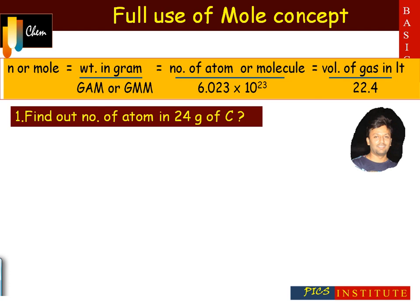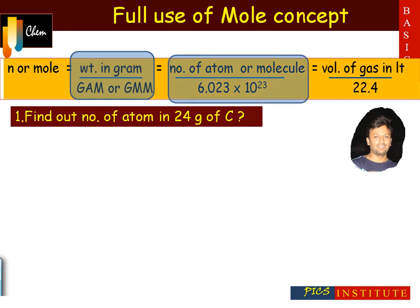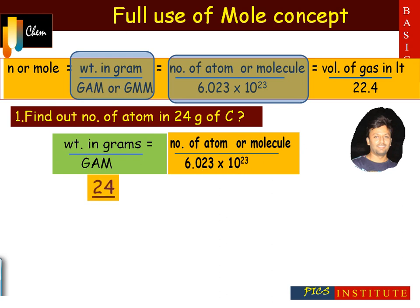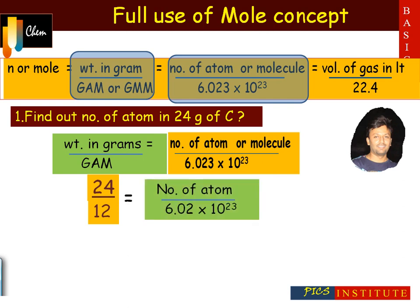By using this formula we can solve every numerical of mole concept. Let's understand the question: find out the number of atoms in 24 grams of carbon. First, we identify what we want to find and what we are provided with. We are provided with the weight of carbon, so we use the weight formula. We need to find the number of atoms, so we extract the formula relating weight and number from the combined formula. After putting in the values, the number of atoms is 12.04 × 10²³.